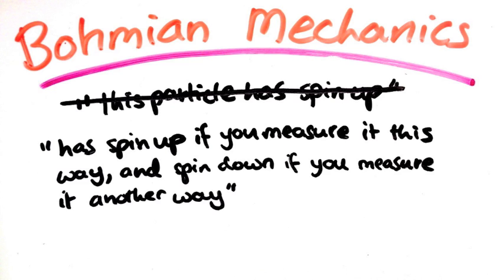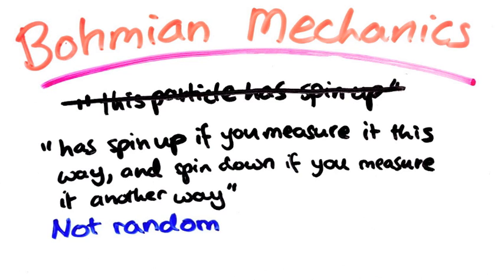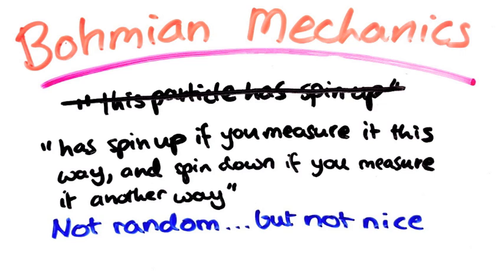It's still perfectly deterministic, there's no randomness, but it's just not that nice. This is what we call contextuality.